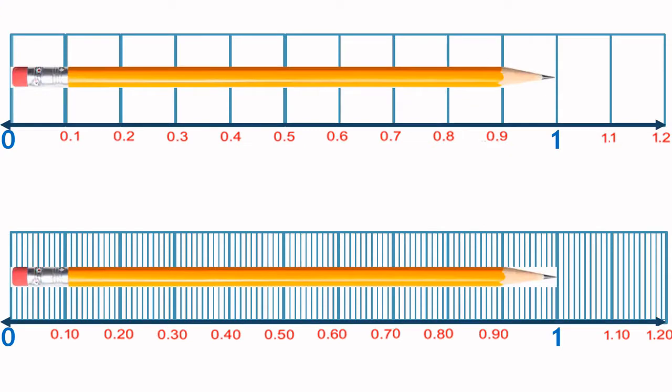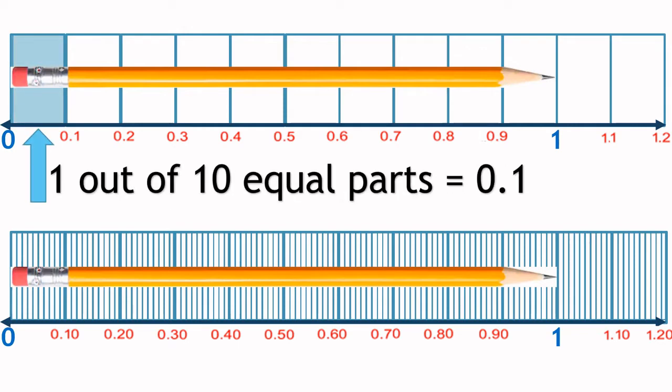Let's take a look at these number lines. This one is divided into 10 equal parts and each part is called one-tenths.